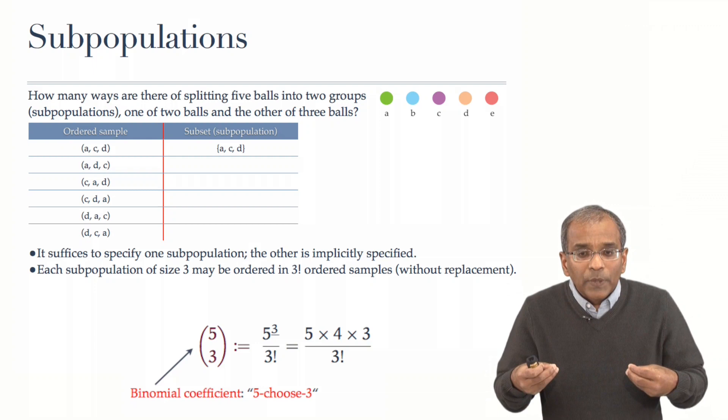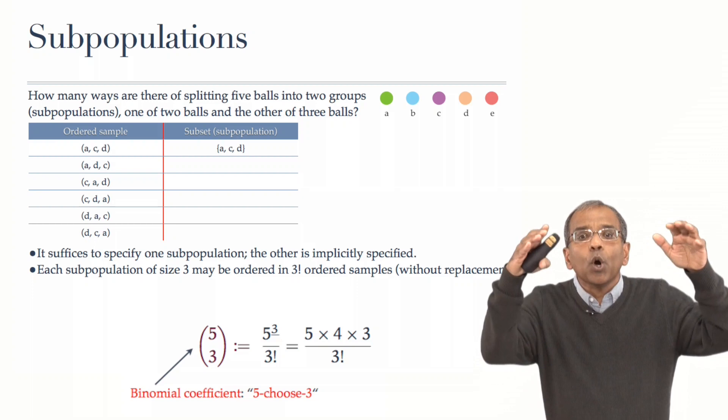five choose three. We represent it by writing a five on top, a three below, and enclose the whole in round brackets.